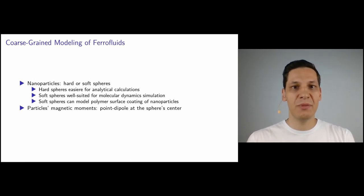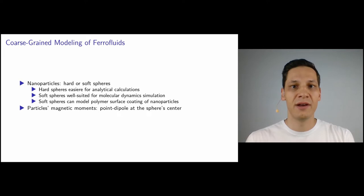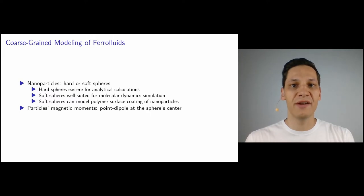On a coarse-grained level, particles are represented by point particles. To add steric interactions between the particles, we can use hard or soft sphere potentials. Hard spheres are easier to work with in analytical calculations and are also well suited for Monte Carlo simulations. However, if one is interested in the dynamic evolution of a system, soft spheres are way better suited. Soft spheres are also used when the polymer coating — that is the surfactant on the surface of the magnetic nanoparticles — is of importance, because the soft potential can be used to model these soft interactions quite well.